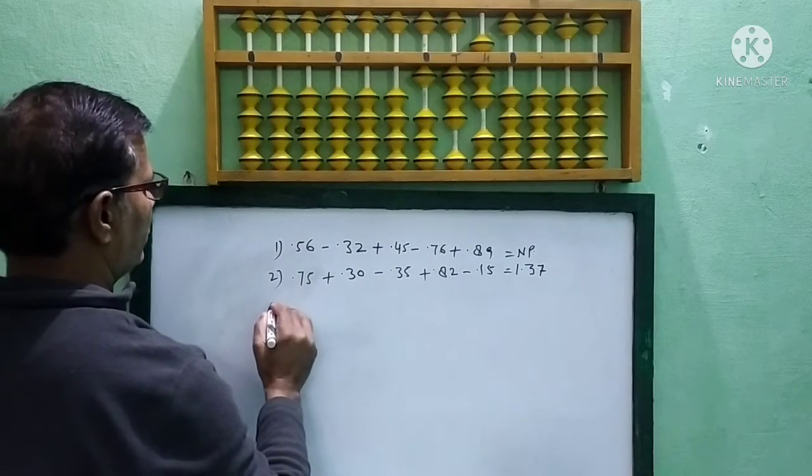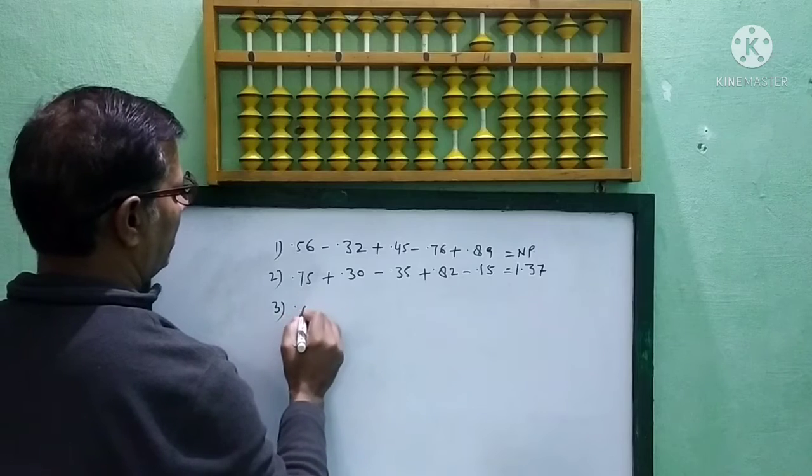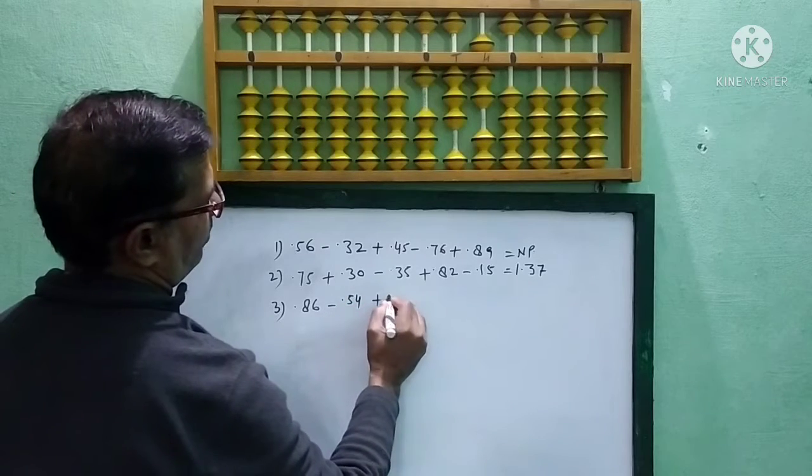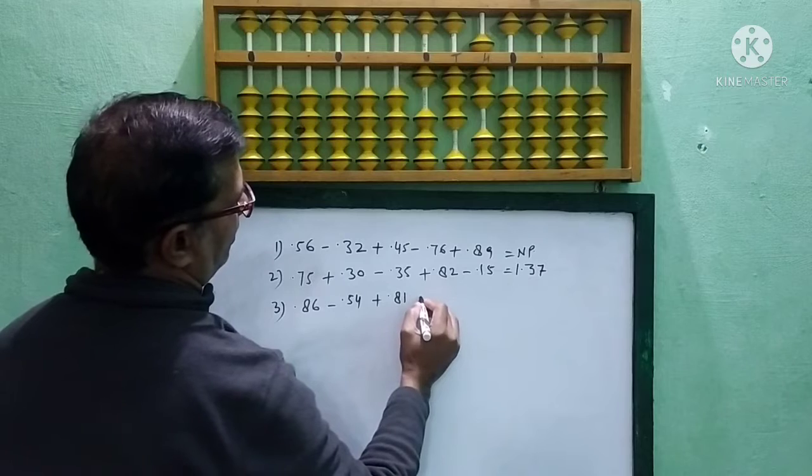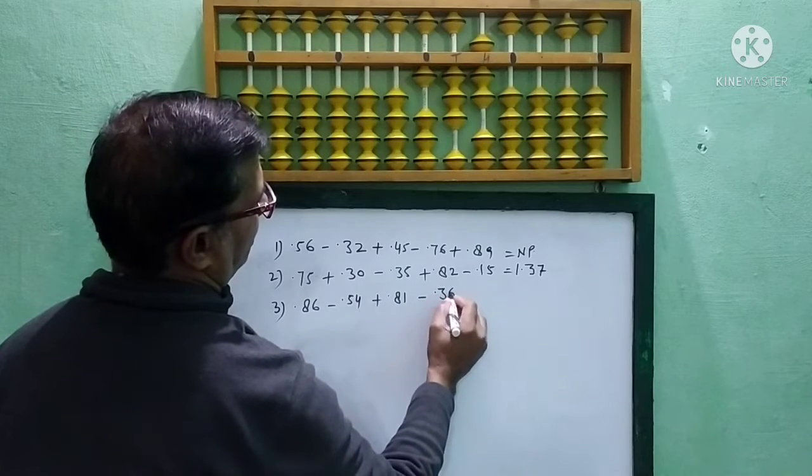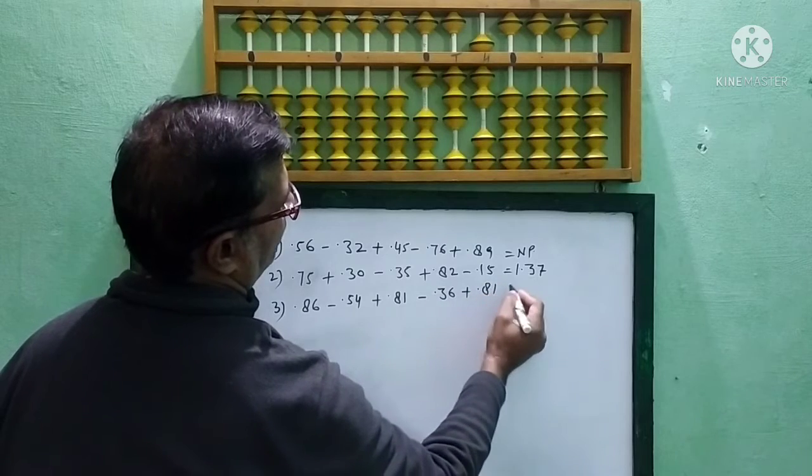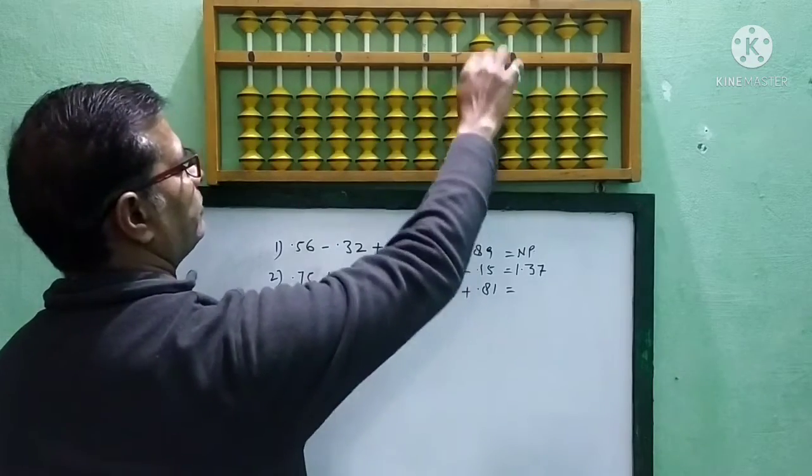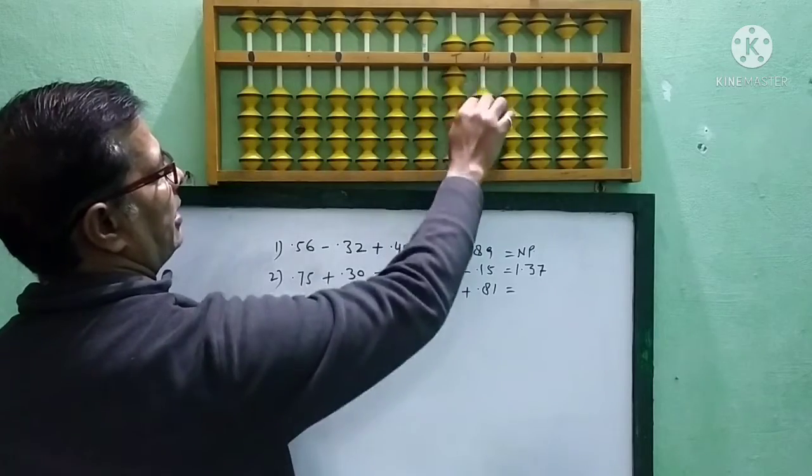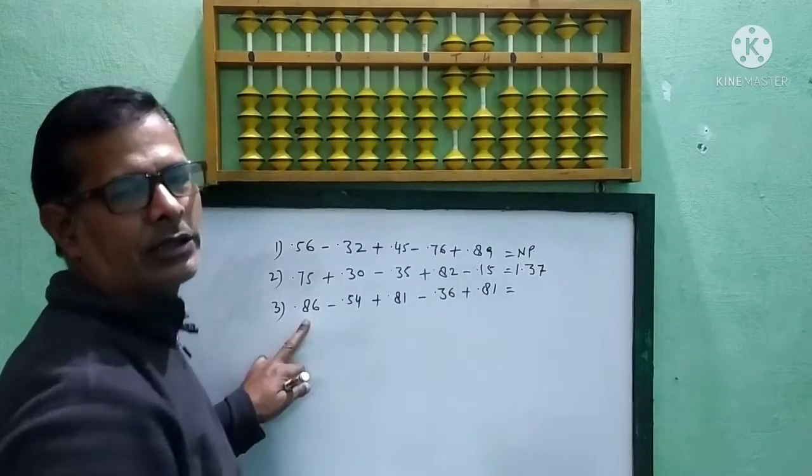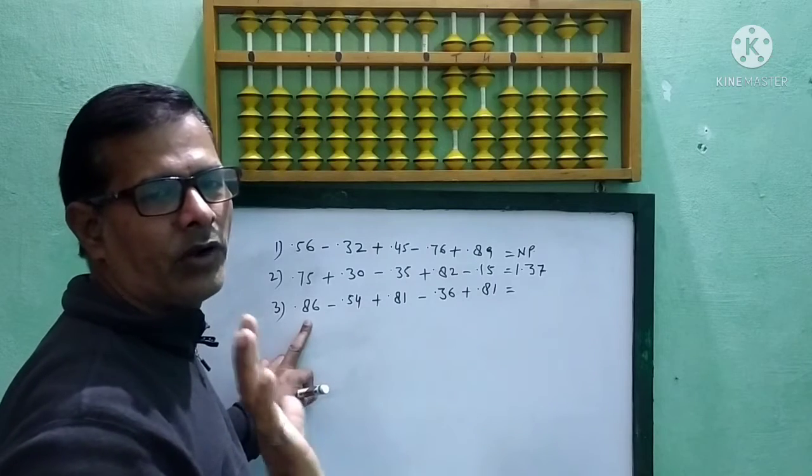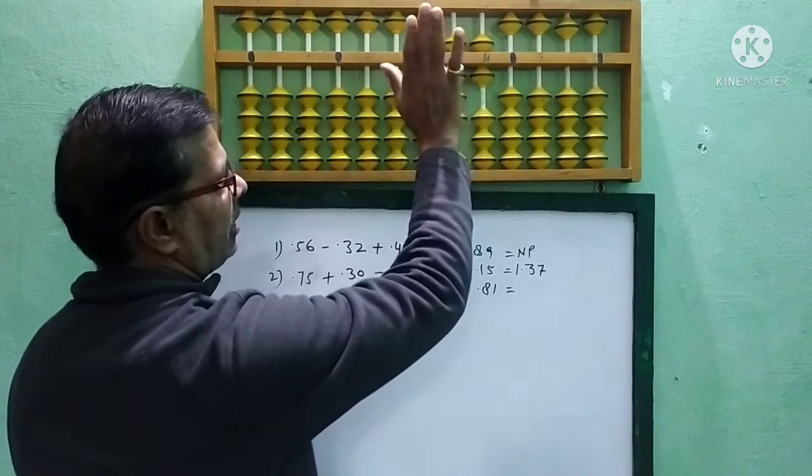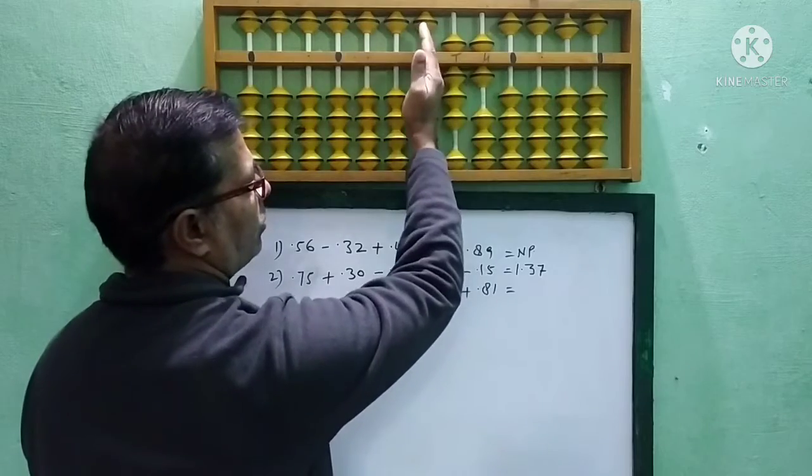Now, one more question. Question number 3: 0.86 minus 0.54 plus 0.81 minus 0.36 plus 0.81. Now, look at this question. This question is 0.86. Use only right hand for the decimal. When we will solve decimal problems, use only right hand side. This means right hand. So, don't go left hand.